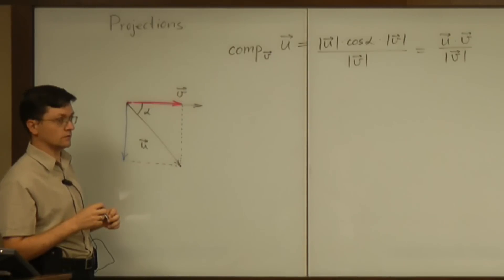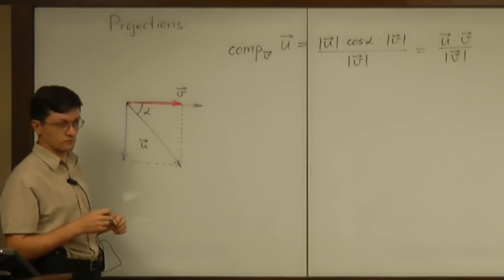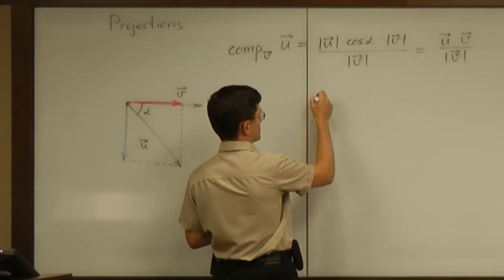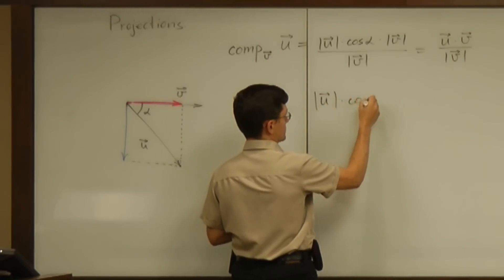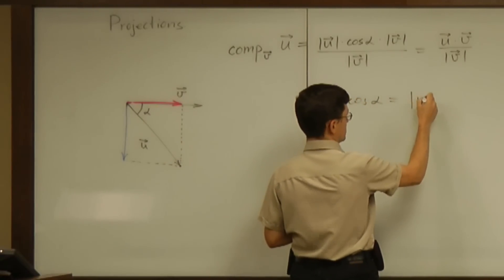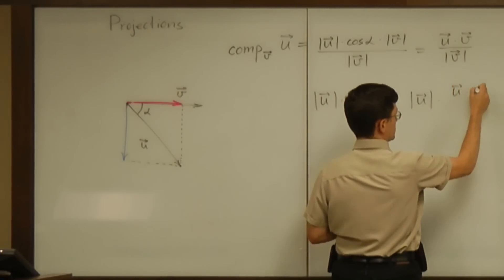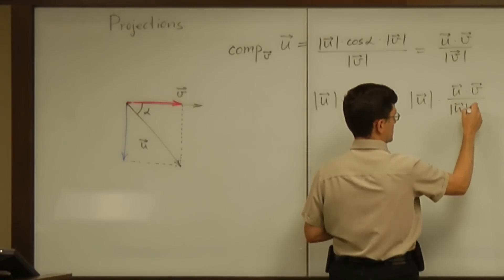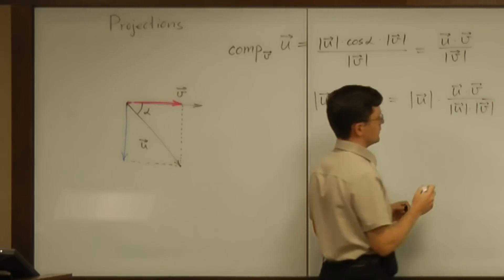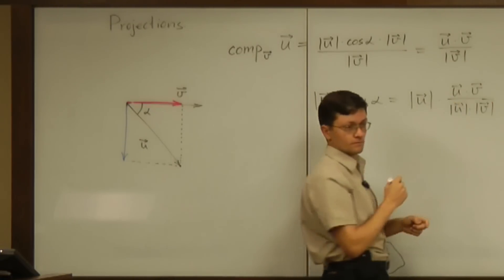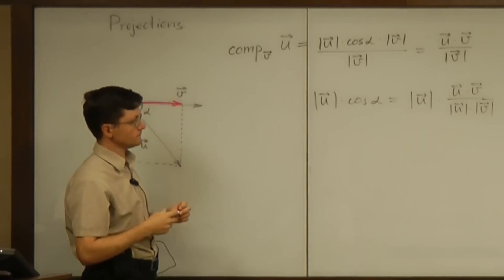Student: Couldn't you also use the law of cosines to get the dot product over the magnitude and then just cancel out the extra term? Yes, yes, you can do that. So if you just start with that formula, u times cosine alpha, and replace cosine with u dot v divided by magnitude of u times magnitude of v, then u cancels and you arrive at the same formula.